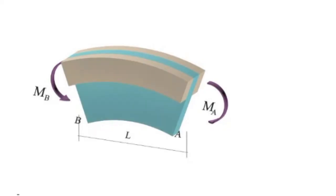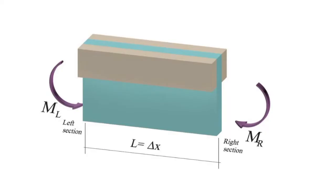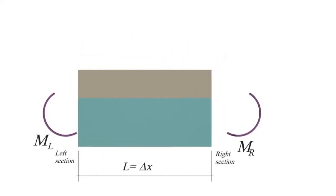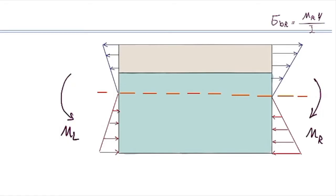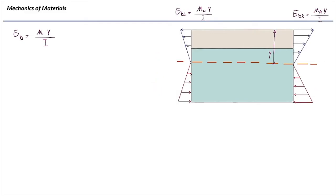I want to study this beam and see what stresses are developed. I'm going to take out one of those parts and study it individually. Because of the bending moment, there will be bending stress on the beam. This bending stress is zero at the neutral axis and has maximum values on the sides, since stresses increase linearly. Bending stress on the right side, sigma BR, is M_R times Y divided by I. Bending stress on the left side, sigma BL, is M_L times Y divided by I. Y is the distance from the neutral axis to the point at which we want to determine stress.